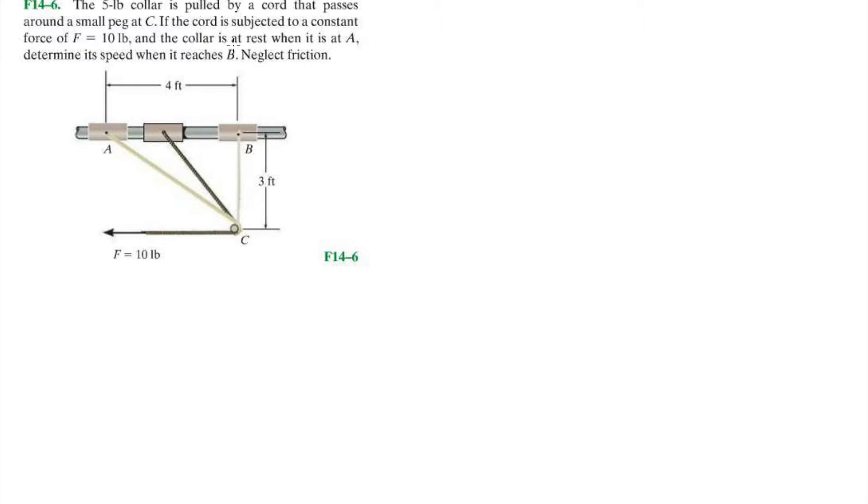So a 5-pound collar is pulled by a cord that passes around a small peg C. If the cord is subjected to a constant force F, and the cord is at rest when it is at A, determine its speed when it reaches B. Okay, so it starts at rest, right?